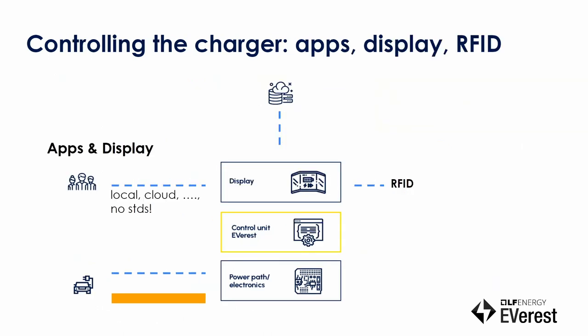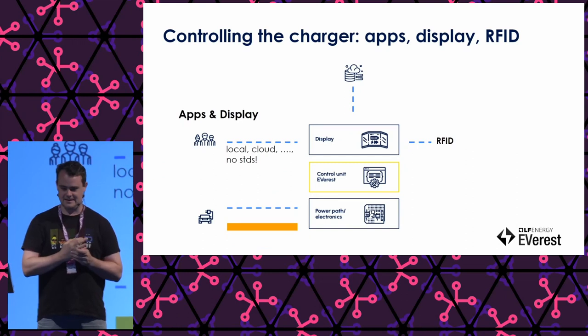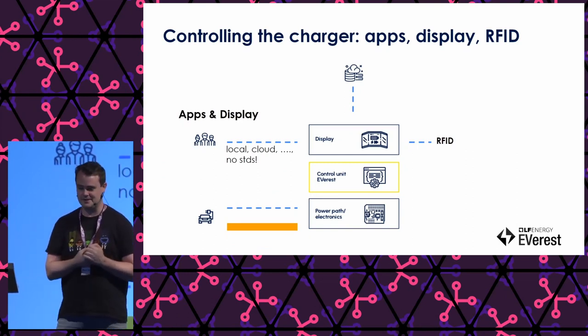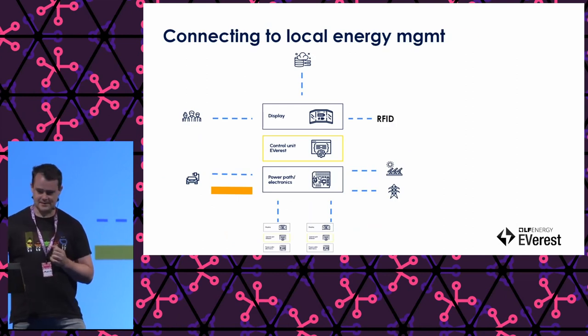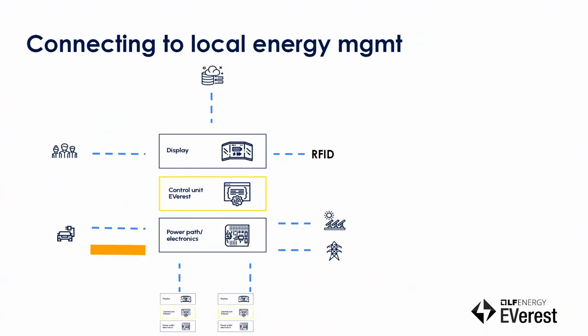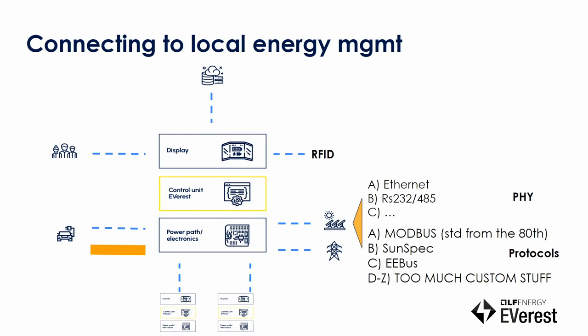Next level, you maybe want to talk to humans. So you have maybe a display, maybe an RFID reader, and there's kind of no standards at all — everyone is doing something different. And then you have maybe other charging stations to the left and right, and the electric grid where you want to draw power from. Again, a lot of different ways to communicate with your local solar stations, a lot of different protocols. It's really a nightmare if you ask any electrician whether you can get a charging station that speaks to your solar — you're barely able to buy that because nothing works together.